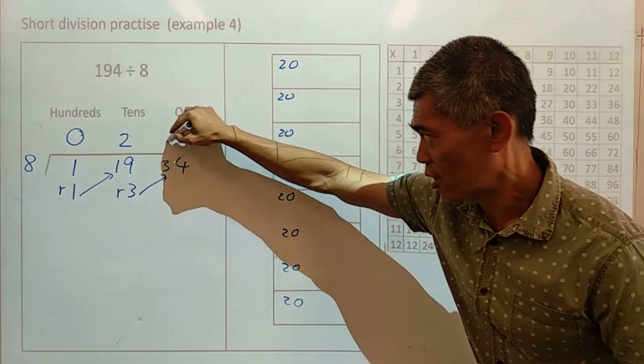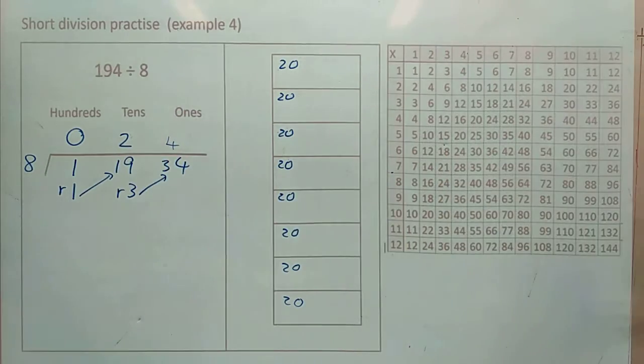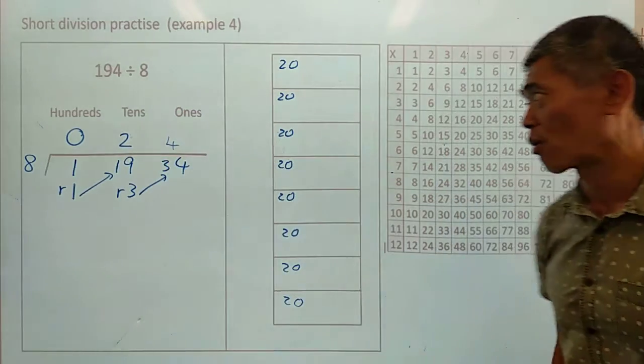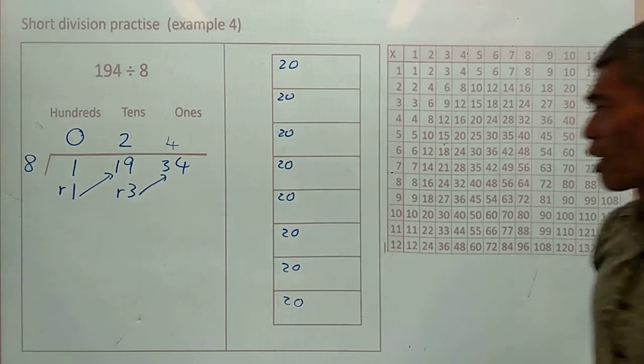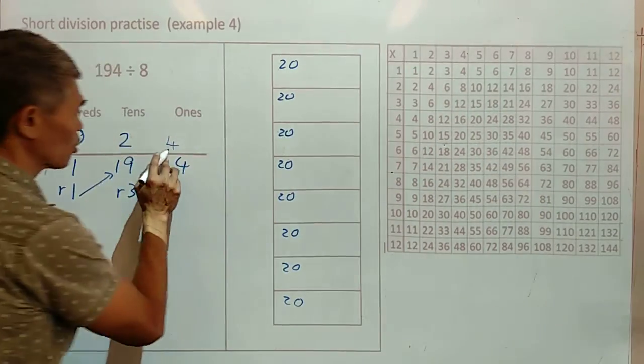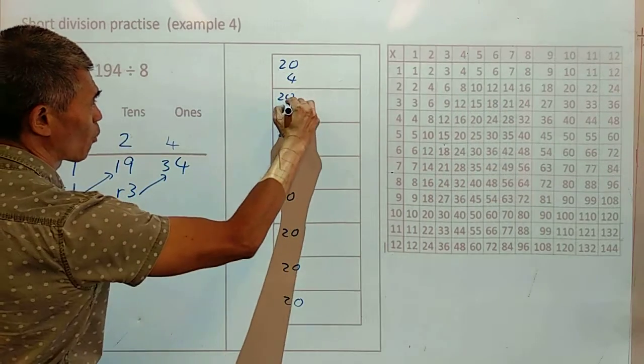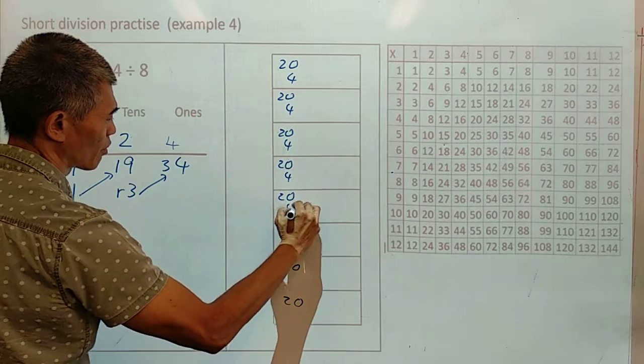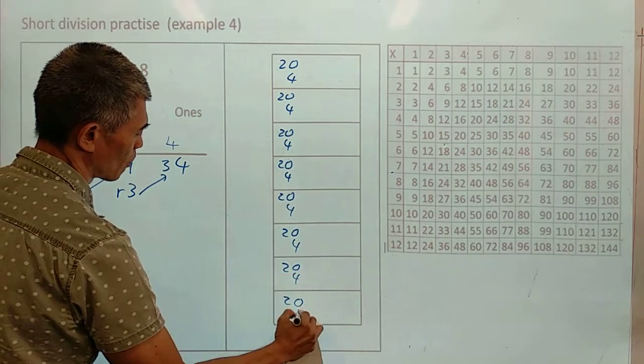That means 8 times 4, or 4 eights can go into 34. This also means that I have 4 ones in each of the boxes.